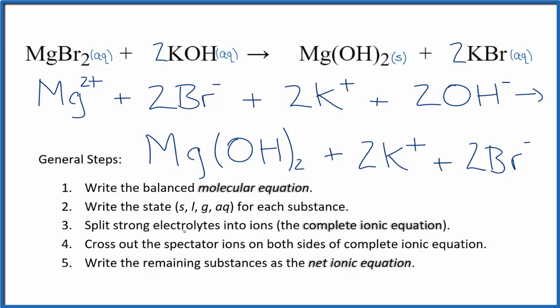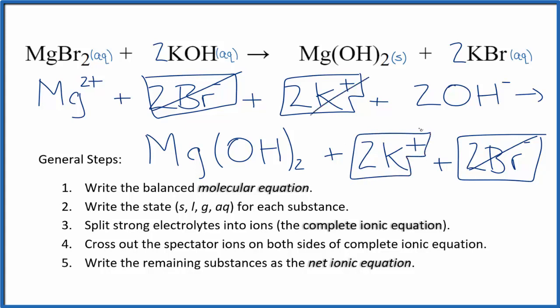Now we cross out spectator ions. They're on both sides. In the reactants, I can see I have two bromide ions right here and in the products, so these are spectator ions. We're going to cross those out. And then I have two potassium ions, and again in the products, spectator ions, we cross these out.